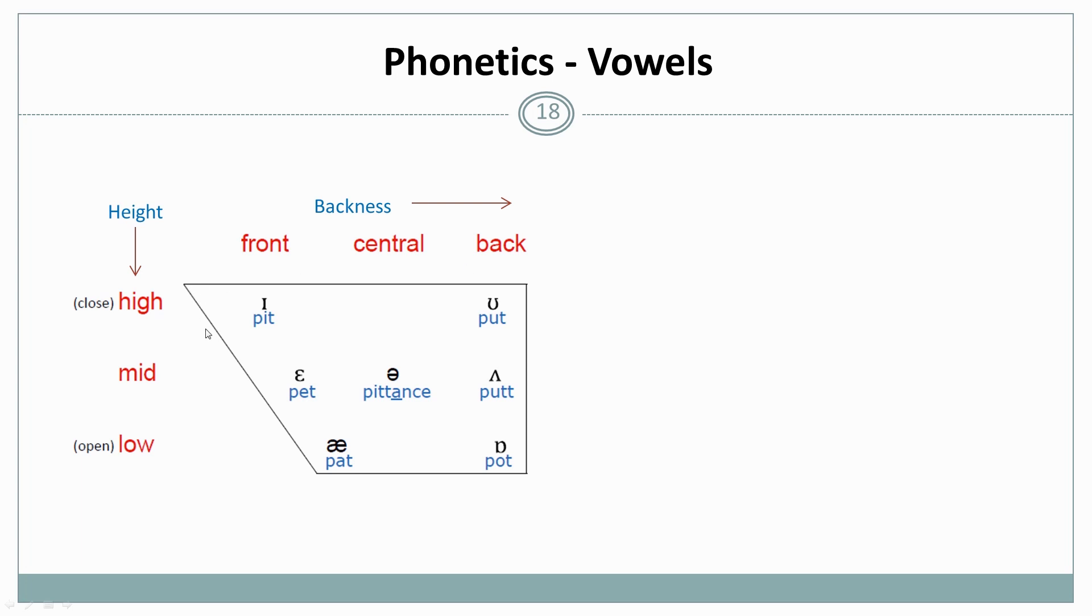So a front high sound would be i as in pit. A mid kind of front sound would be e as in pet. And then we have a low, almost central sound, the æ as in pat. And the central mid sound would, for example, be the ə as in pittance. This sound is called the schwa.